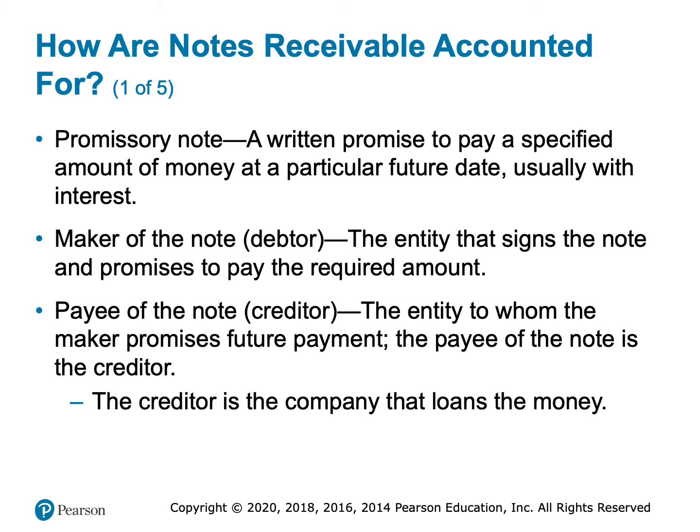In this chapter, we are going to be the lender — the payee, the creditor — loaning money to customers or maybe a subsidiary company. When we get to chapters 11 and 12, we'll look at it from the perspective of the borrower, the maker, or the debtor.